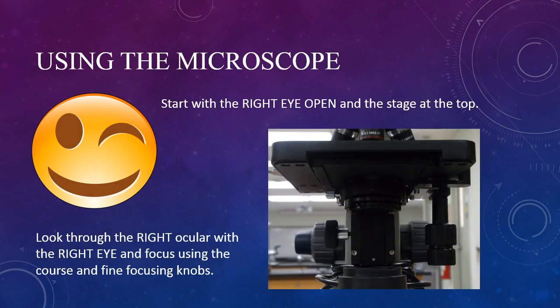Now let's address the clarity of the image. We need to bring our specimen into focus. We start by closing the left eye, and with the right eye open, look through the right ocular and focus the image with the coarse and fine focus knobs located at the bottom of the frame.